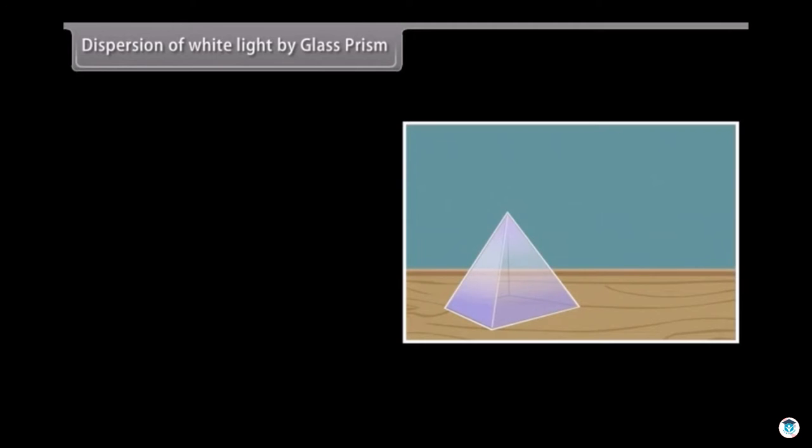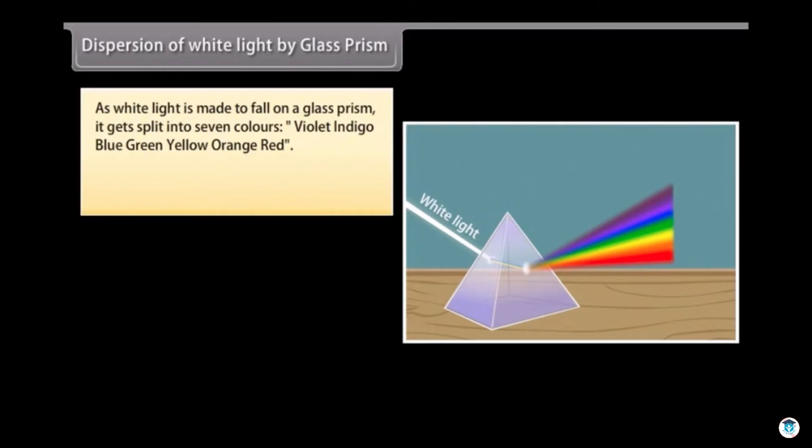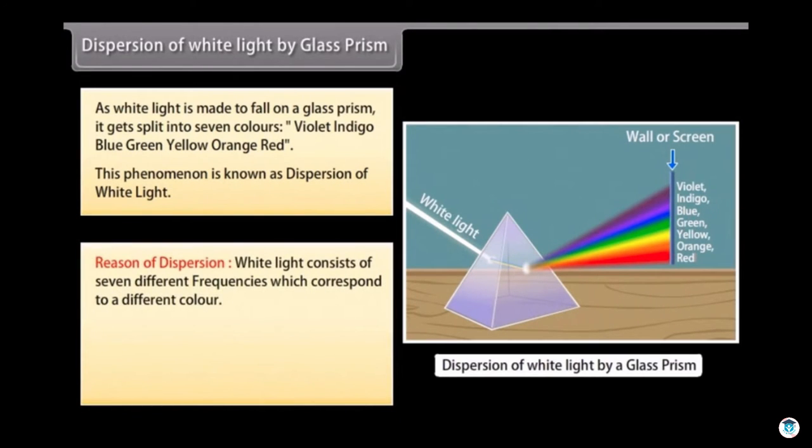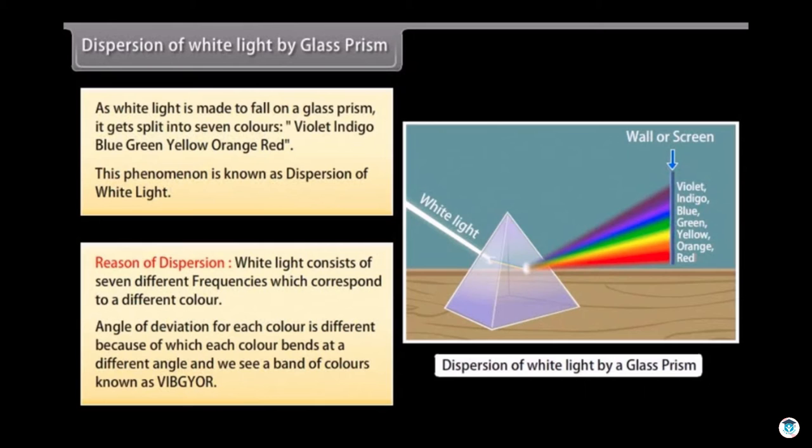Dispersion of white light by glass prism: As white light is made to fall on a glass prism, it gets split into seven colors: Violet, Indigo, Blue, Green, Yellow, Orange, Red. This phenomenon is known as dispersion of white light. Reason of dispersion: White light consists of seven different frequencies which correspond to a different color. Angle of deviation for each color is different because of which each color bends at a different angle and we see a band of colors known as VIBGYOR.